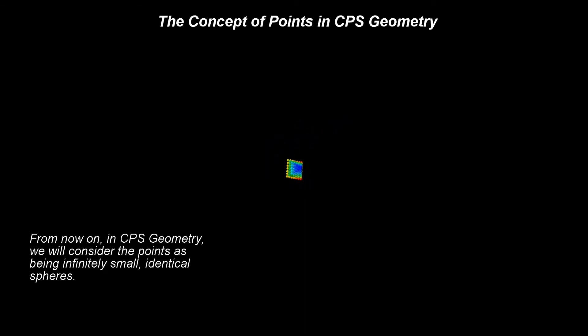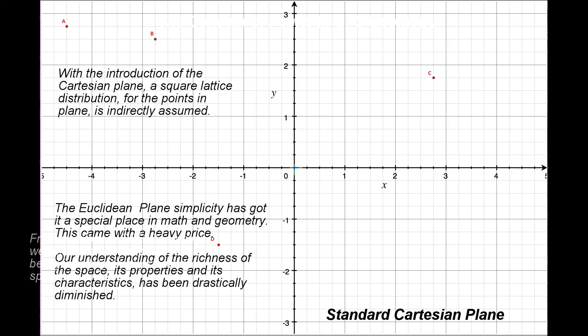Euclidean geometry does not assume or consider any arrangement for the points, in plane, or in space. Later, with the introduction of the Cartesian plane, a square lattice distribution for the points in plane is indirectly assumed.